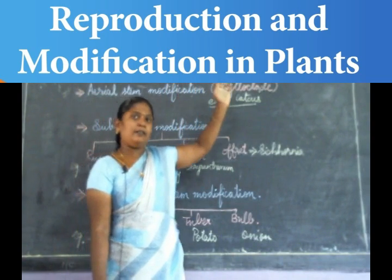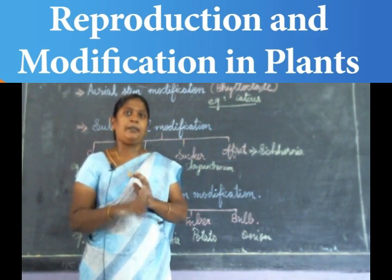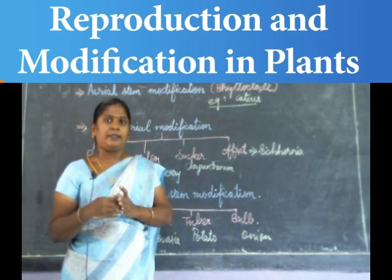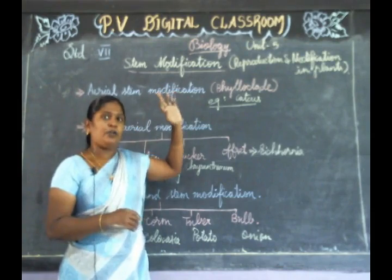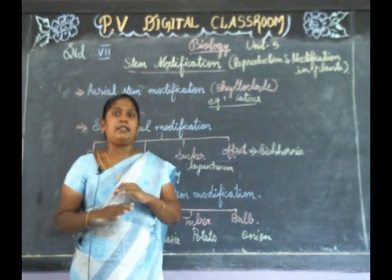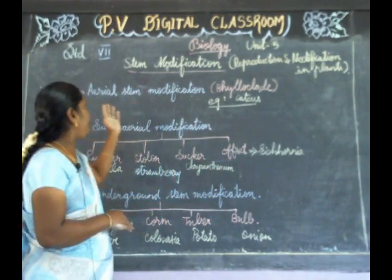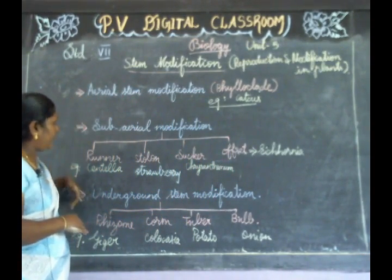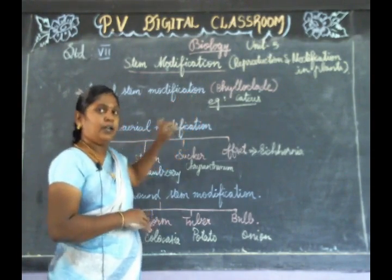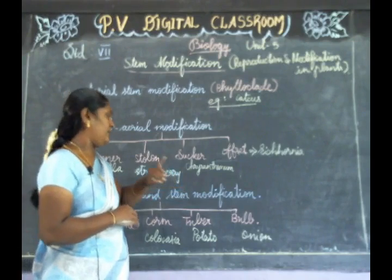Good morning children. I am already in the fifth unit. The area modification of the plant was divided into three categories. The first one is the aerial stem modification, the second one is the sub-aerial modification, and the third one is the underground stem modification.